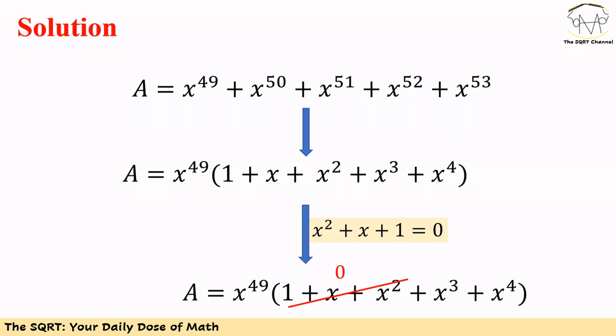To solve this problem, let's start by factoring out what's common in all of these terms. You can see that x^49 is a common term we can factor out. If we do so, the expression becomes x^49 times (1 + x + x² + x³ + x^4). Now, remember from the assumptions of the problem, x² + x + 1 = 0, so the first three terms here can be replaced by 0.